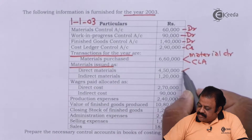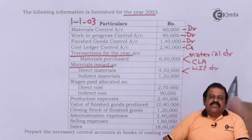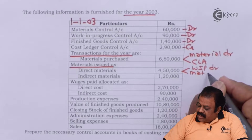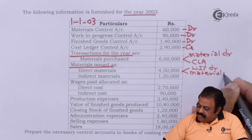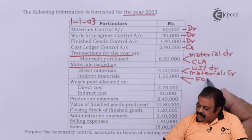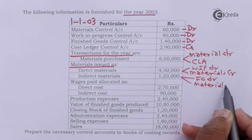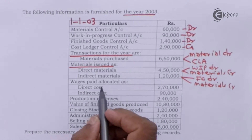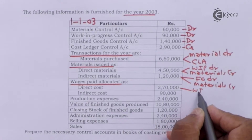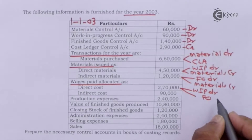Material issued as direct materials — Work in Progress will be debited and Material Control will be credited. For indirect materials, Factory Overheads will be debited and Materials Control will be credited.